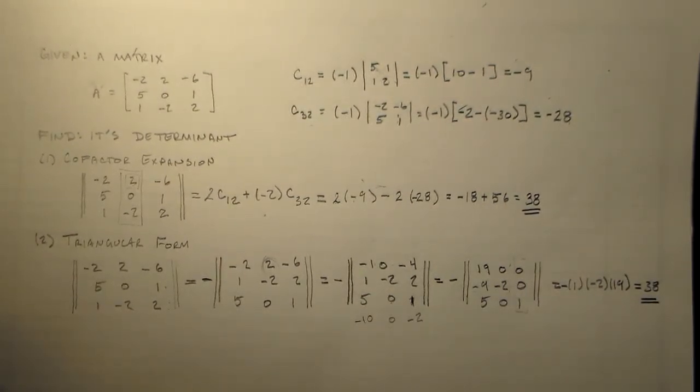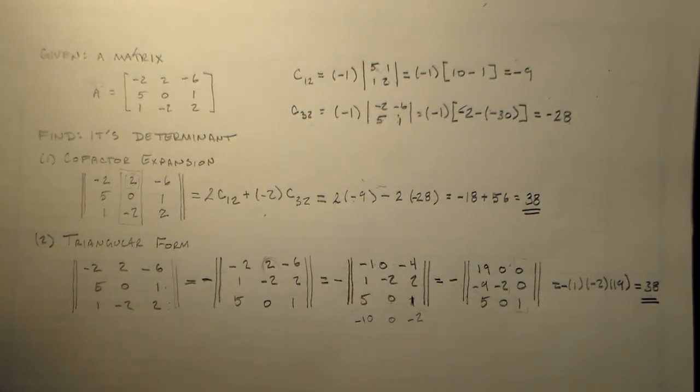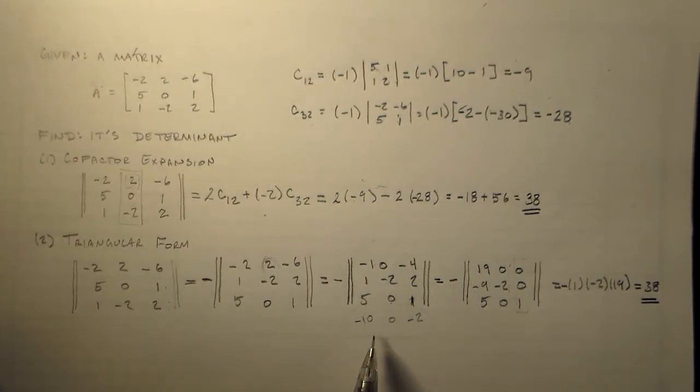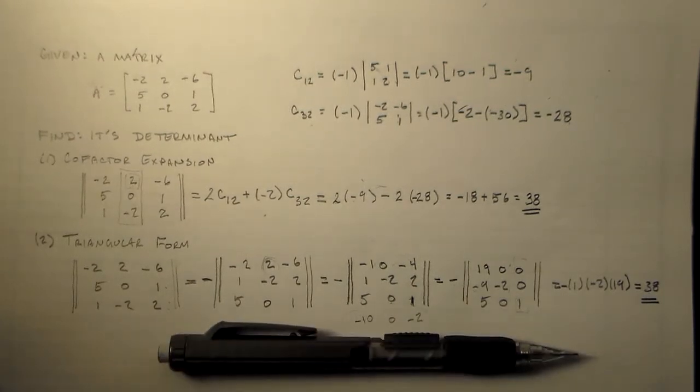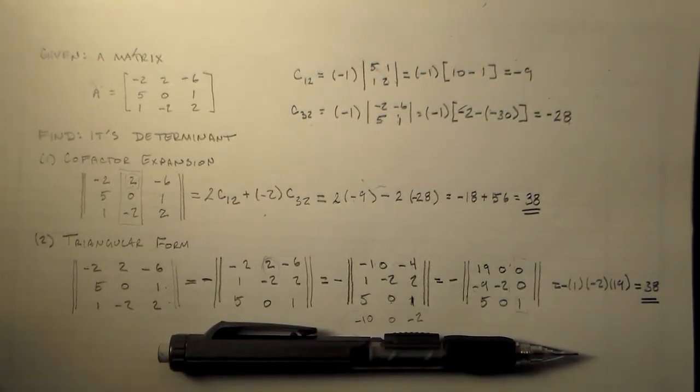Both give you the same answer, which is what we wanted. Alright. So, two methods, same answer. And like I said, what separates the expert from the novice is not that they do everything right the first time. It's that when they're screwing up, they notice. Alright. So, I will see you in a couple minutes. I hope for some more fun with determinants. Thank you.